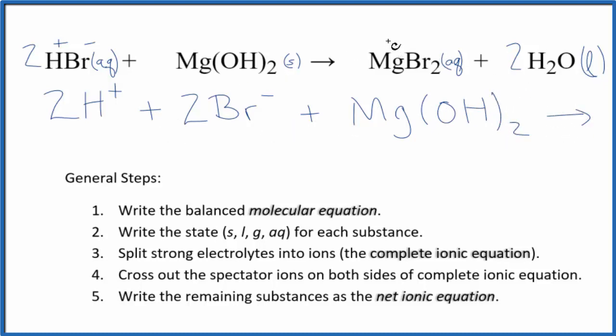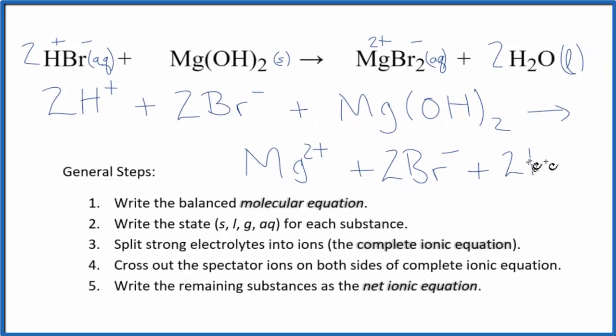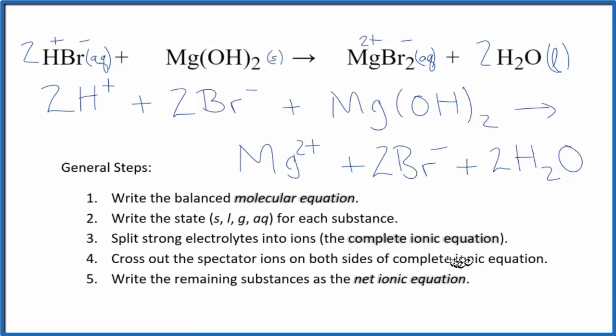On the product side, magnesium's in group two. That's two plus. We said the bromide ion is negative. So I have Mg2 plus. Plus this two means I have two bromide ions. And then we don't split water apart either. We're not going to split liquids apart. Two H2O. This is the complete ionic equation.